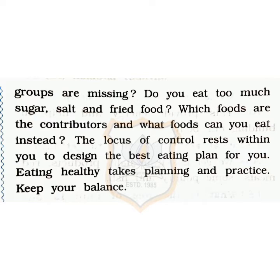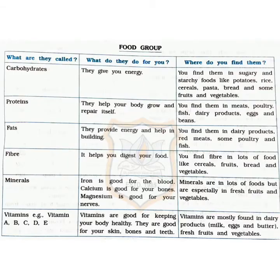A chart has been given showing food groups — what they are called, what they do for you, and where you find them. Carbohydrates give you energy and you can find them in starchy foods like potatoes, rice, cereals, pasta, bread and some fruits and vegetables. Protein helps your body to grow and repair itself and you find it in meat, poultry such as chicken, fish, dairy products, eggs and beans.